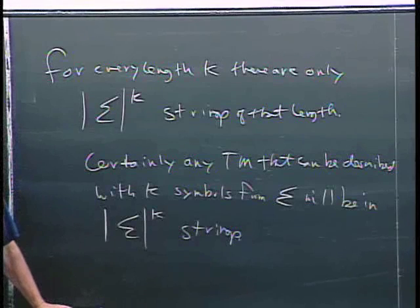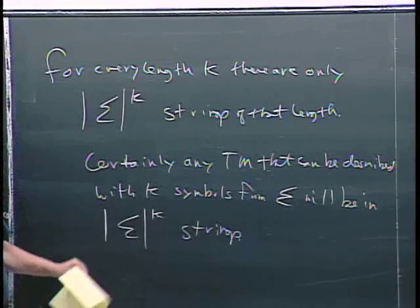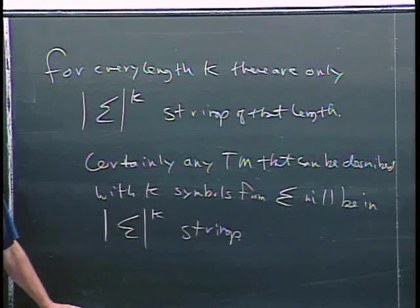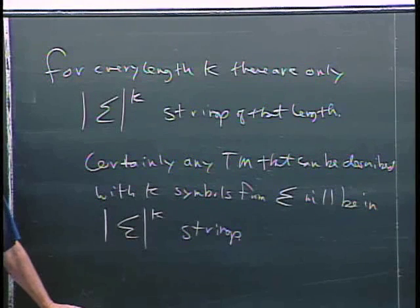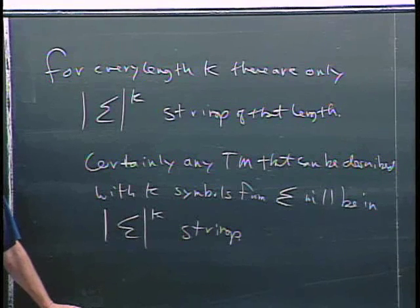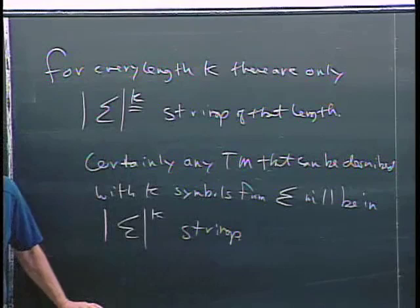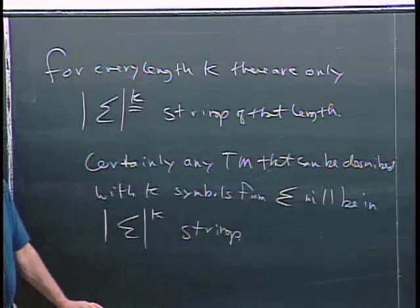Is there a one-to-one correspondence between the set of all strings over this alphabet and the natural numbers? One-to-one and onto correspondence? Yeah, you have all the strings of length one, followed by all the strings of length two, followed by all the strings of length three, and so on. And for any length K, that will eventually be in the list at some finite distance from the start. None of these sets, for no K is this set infinite. These are all finite.